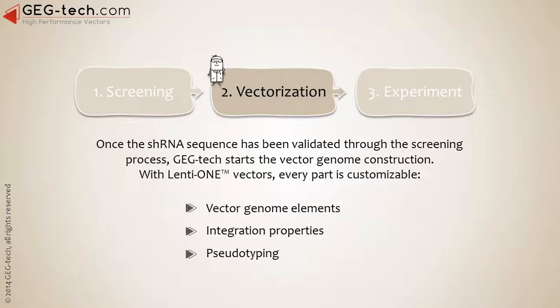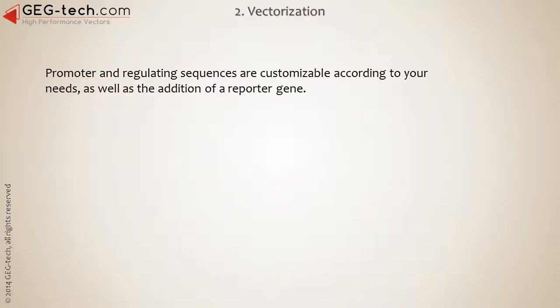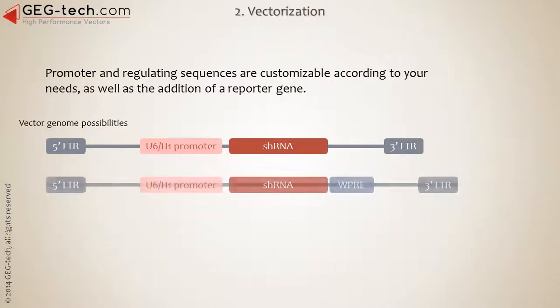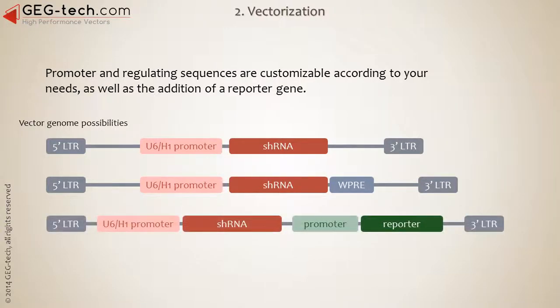Once the shRNA sequence has been validated through the screening process, GEG Tech starts the vector genome construction. With Lenti1 vectors, every part is customizable – vector genome elements, integration properties, and pseudotyping. Promoter and regulating sequences are customizable according to your needs. You can also choose to add a reporter gene. As you can see, the possibilities are numerous.